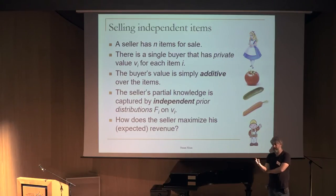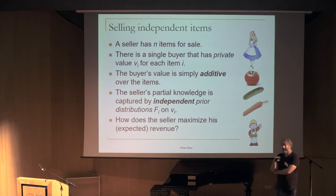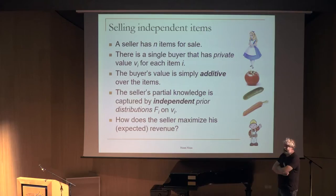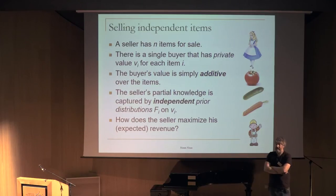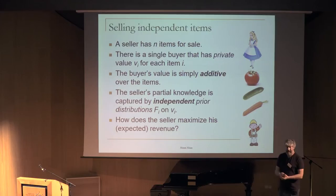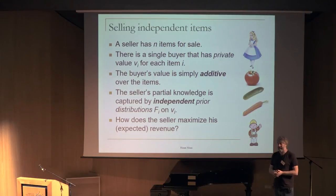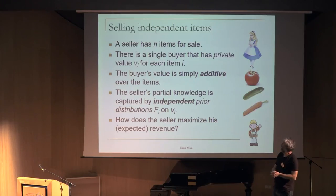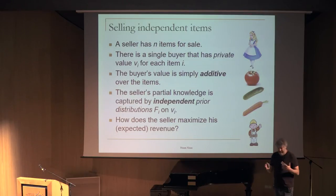We take the classical economic point of view. The seller just wants to make as much money as possible. For this talk, I'm interested in the simple point of view of a seller that wants to maximize revenue with zero cost. If the seller knows the buyer's value v_i for every item i, it's easy — just ask the buyer to pay v_i for each item. But the seller doesn't have full information.